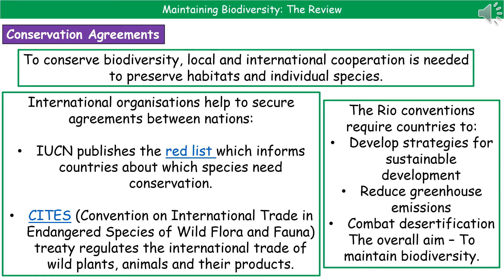One of the key things behind this conservation of biodiversity is that we need both local and international cooperation in order to preserve these habitats and individual species. International organizations help to secure agreements between the different nations. The IUCN published the Red List, which tells countries about which species need conservation. And then the Convention on International Trade in Endangered Species of Wild Flora and Fauna (CITES) treaty regulates the international trade of wild plants, animals and their products. We've also got the Rio Conventions that require countries to develop strategies for sustainable development, to reduce their greenhouse emissions and to combat desertification, with the overall aim to maintain biodiversity.